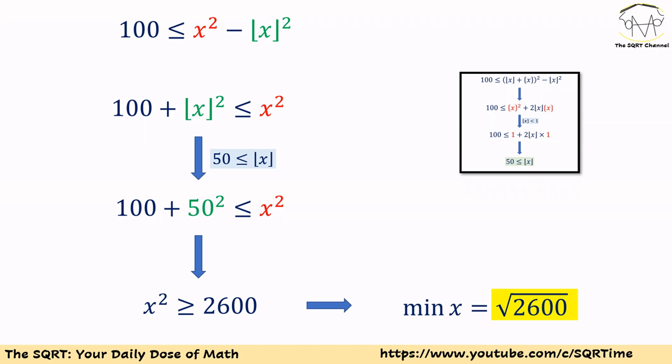Since 50 is the minimum value for floor of x, we can say that x squared is greater than or equal to 100 plus 50 squared. So x squared is greater than or equal to 2600. As a result, the minimum value that we can have for x is the square root of 2600, and that's our final answer.